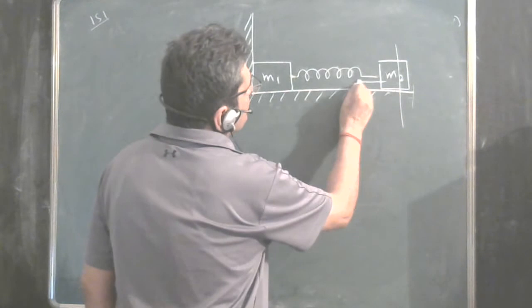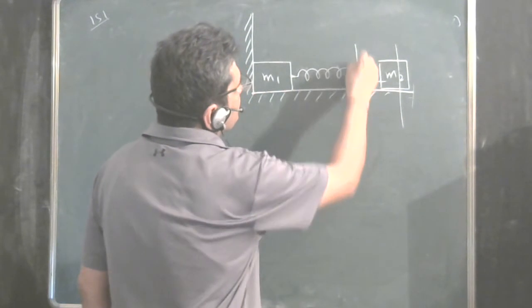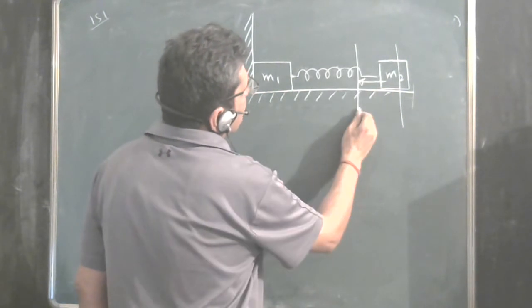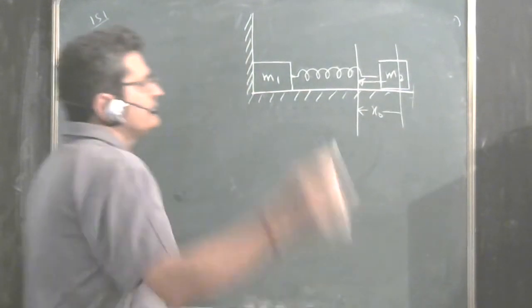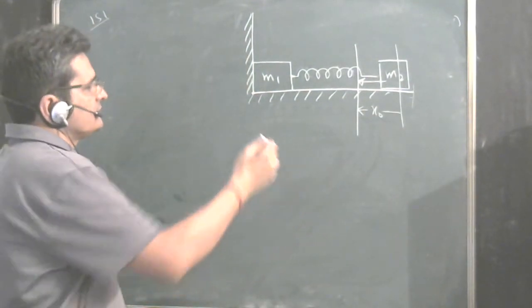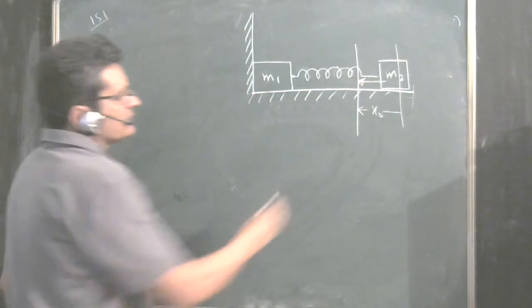This mass M2 is given a small displacement in this direction by a distance say x0 and then released. So just imagine what will happen here.